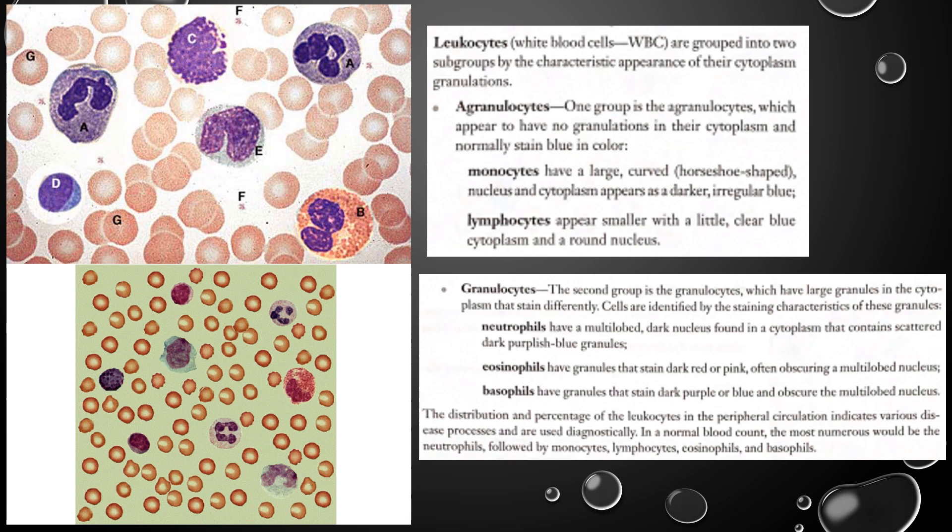Going back to eosinophils — which letter represents those? It should be letter B. On the right-hand side of that, you can see those granules with that pinkish-red color. Now let's get to basophils.